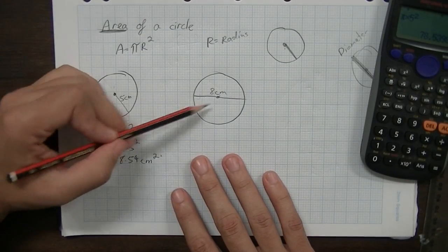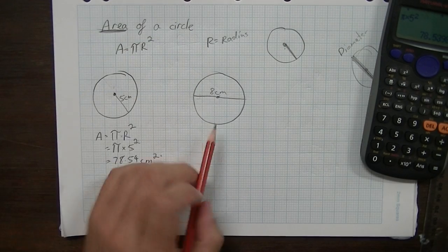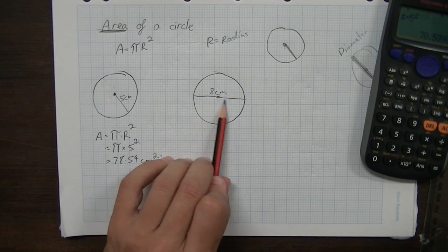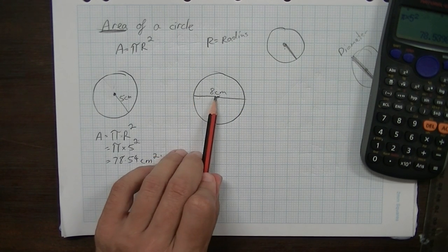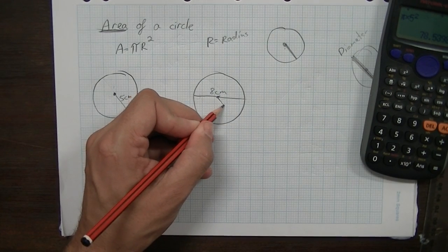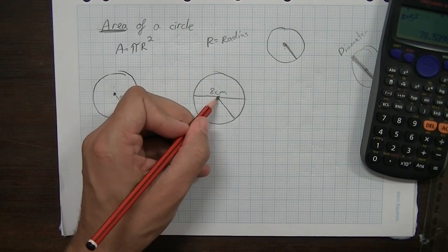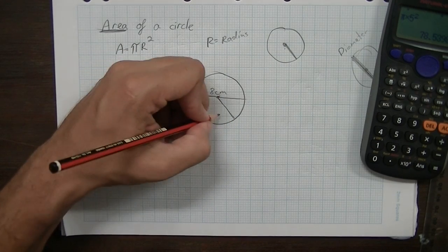OK, so just a little trick question here that ends up getting put in tests. You'll notice that you're not being told the radius, you're being told the diameter. So, the distance from the edge to the centre to the other edge is 8 centimetres, which means that the radius, that is, from the centre to the edge, must be half of that, which is 4 centimetres.